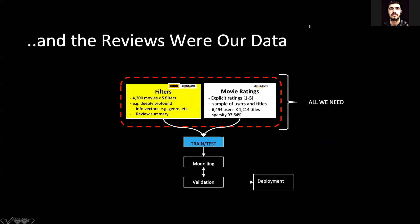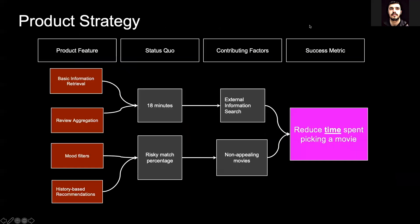In our second phase, we combined the pieces to build our product, to improve the lives of users such as Harriet. We consider it our mission to reduce the time it takes for such a user to pick a satisfying movie, so all of our features are designed to reduce the time spent on external information search and on non-appealing movies.